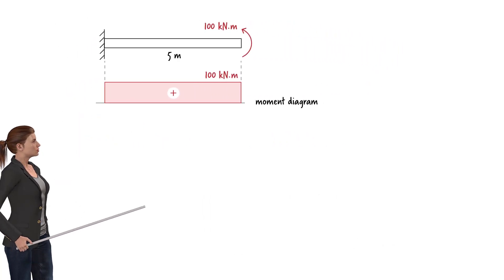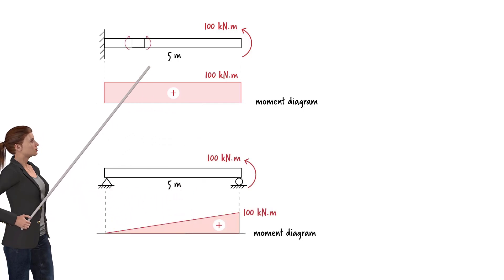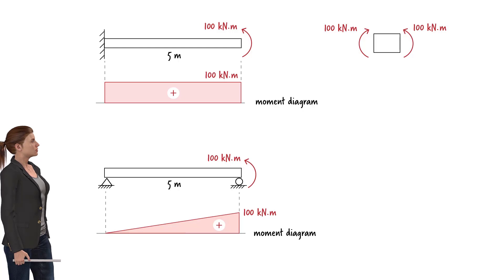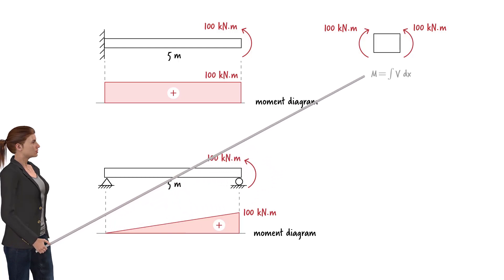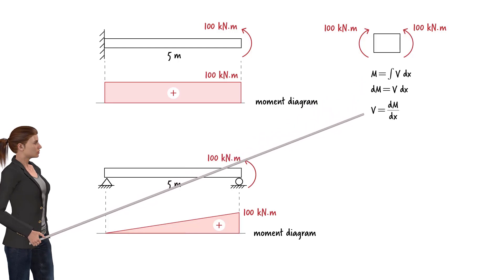The bending moment in a beam could be constant. Consider a segment of this beam. Since the bending moment in the beam does not change, no shear force develops in the segment. This is true since the mathematical relationship between the shear force and the bending moment shows that the shear force can be viewed as the change in the bending moment in the segment. When there is no change in the bending moment, the shear force becomes zero.